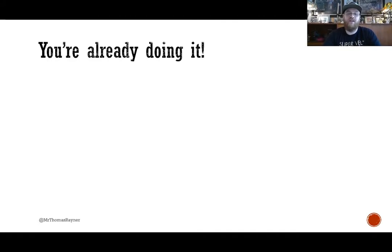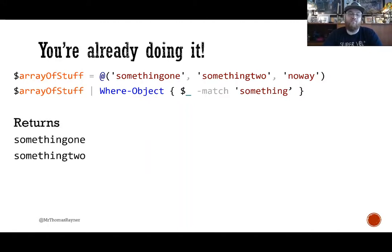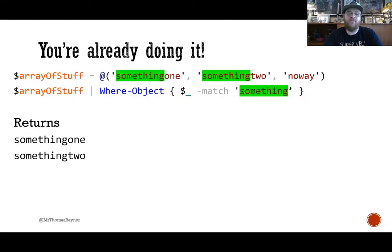You're already doing it — you're writing regular expressions already, and I'll prove it to you. Here's an example where you've got an array of strings, and then you're doing this Where-Object thing where the object matches the string 'something.' This is Regex. This returns 'something one' and 'something two.' If you've done almost any PowerShell, this was probably apparent to you. This green part in the second line — that's a regular expression, and those are the strings where it's being found.